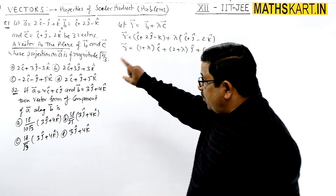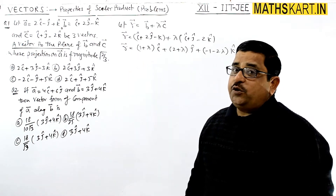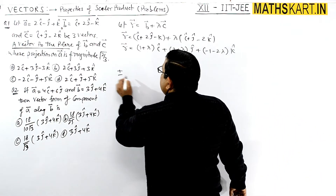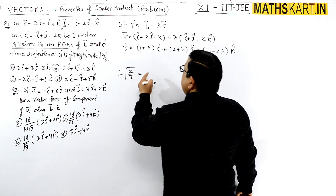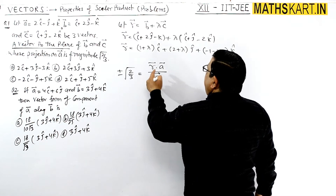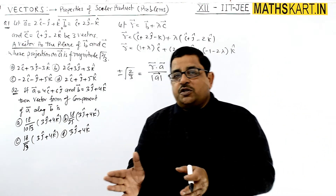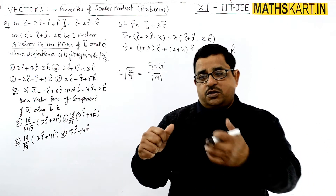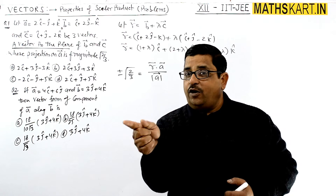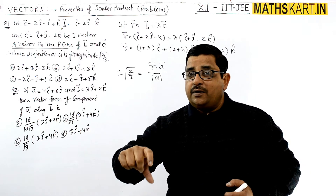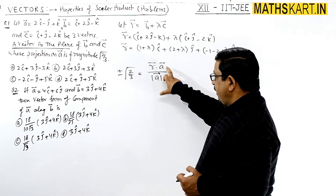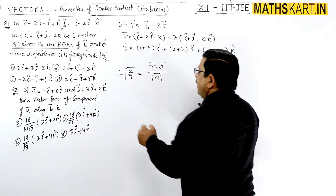The projection of r on a has magnitude √2/3. Since projection can be negative or positive, we write it as ±√2/3. The projection of r on a is r·a divided by modulus of a. Similarly, projection of a on b is a·b divided by modulus of b. So: ±√2/3 = r·a / |a|.